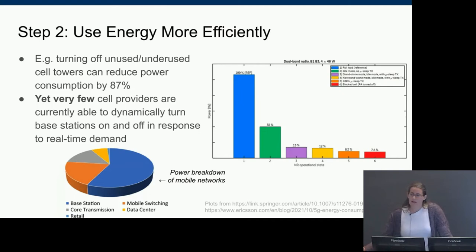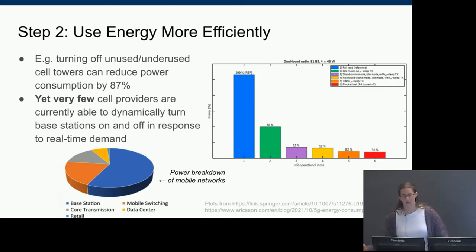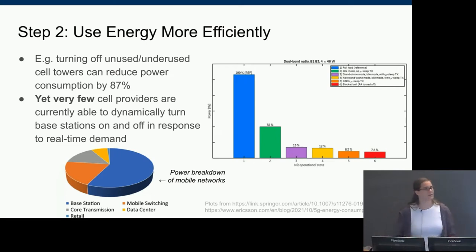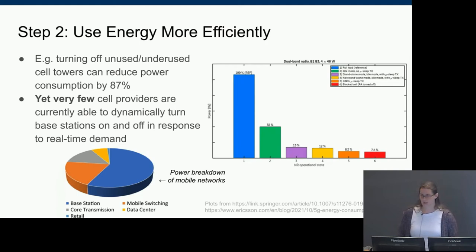Transitioning to renewable energy is highest priority, but there's also room for progress in energy efficiency. Turning off unused or underused cell towers can reduce power consumption by 87%. Since cellular base stations consume about 60% of the power across the entire cell network, dynamically putting cells to sleep could lead to overall network power savings of more than 50% during low traffic times. Even making an algorithm one to ten percent more efficient adds up when millions or billions of devices are using it.